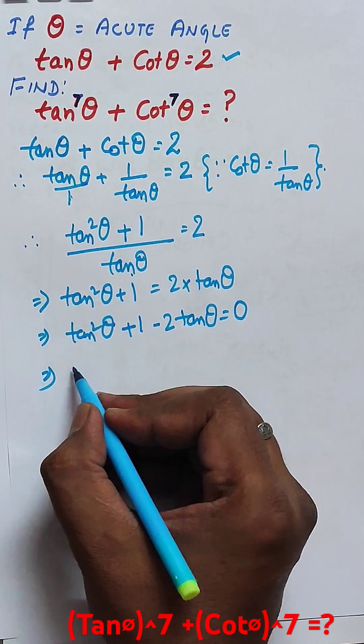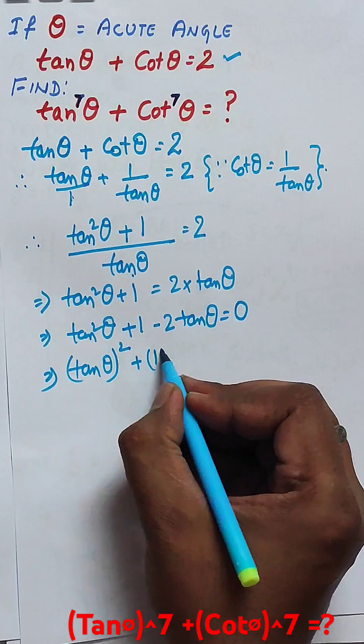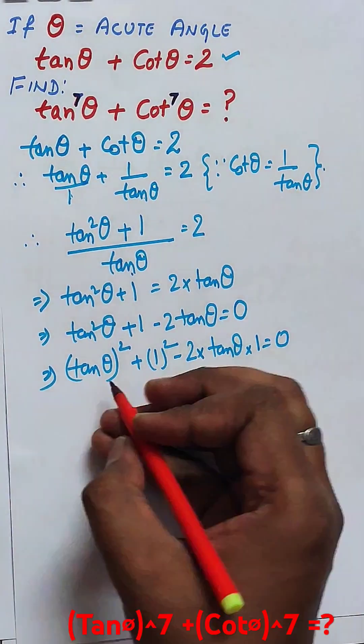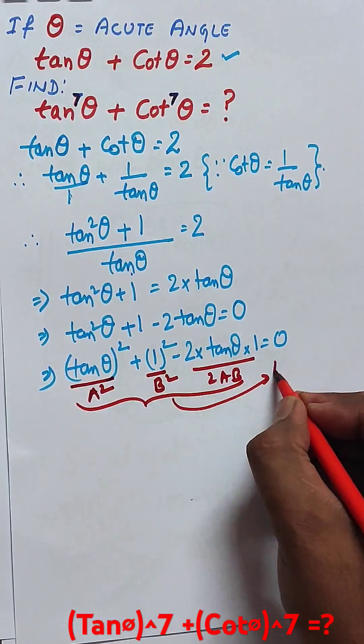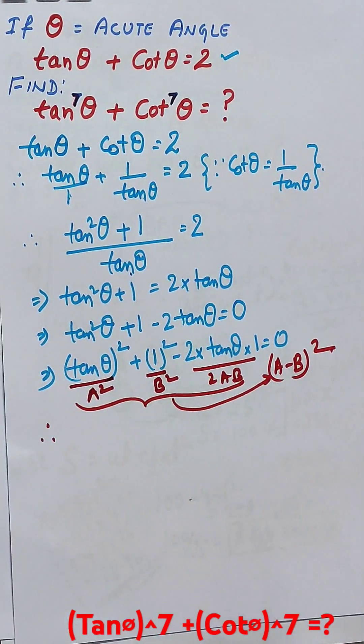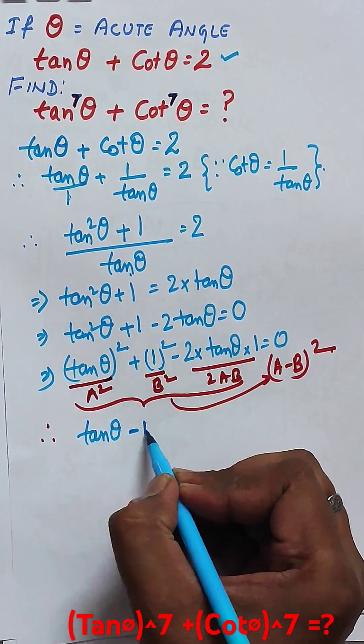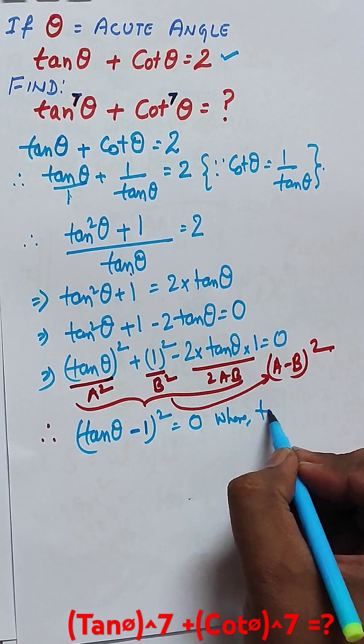Now you can see this is in the form of a squared plus b squared minus 2ab, where a is tan theta and b is 1.